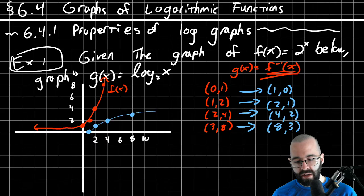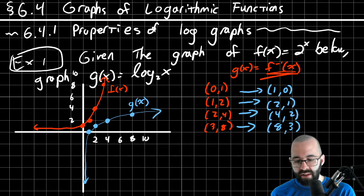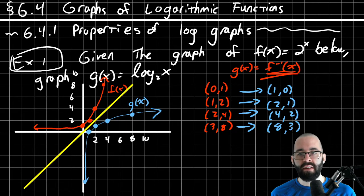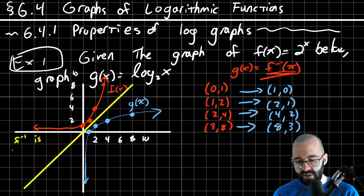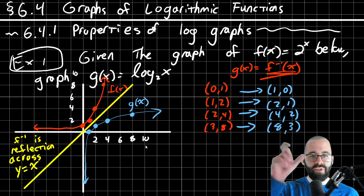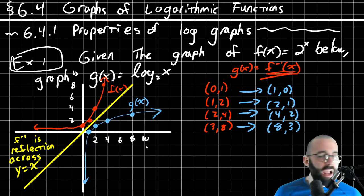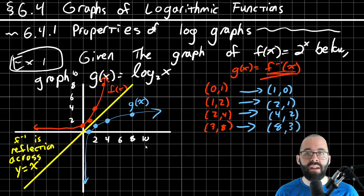Connect those points and we have an asymptote — this is what the graph of a logarithmic function looks like. The graph of an inverse function can also be seen as a reflection across the diagonal line y = x. So the logarithm graph is just the exponential graph reflected. This whole section on graphs of logarithmic functions boils down to inverses — if you know exponents and inverses, there's nothing new here.